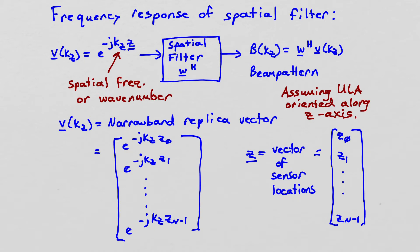And so the input is a narrow band replica vector. So it's a narrow band, we're assuming a narrow band signal. So it's a single frequency in time domain, right? And then it's just a complex exponential. So the first element is e to the minus j kz z0. The last element is e to the minus j kz z n minus 1. Okay? And so we put that into our spatial filter.